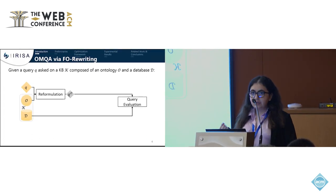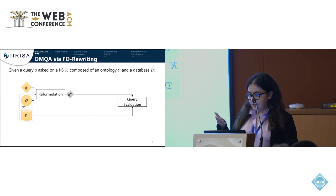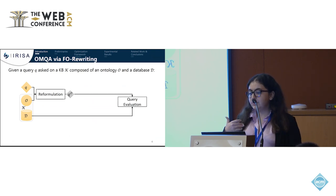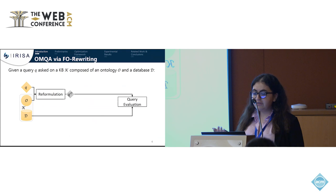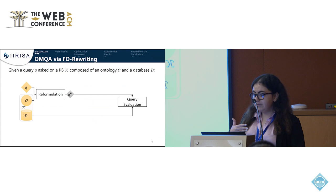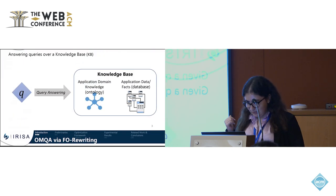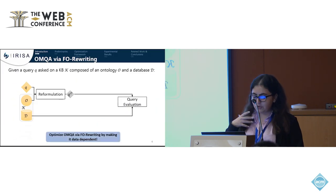We consider OMQA via FOE rewriting specifically, represented by the following figure. Given a query Q asked on a knowledge base K made of an ontology O and a database D, FOE rewriting reformulates Q by embedding the ontological knowledge from O into a query formulation Q_O, which can then be asked directly on the database. However, this reformulation is done with respect to the ontology only and does not take the data into consideration, so it can grow exponentially in the size of Q. What we propose is to optimize OMQA via FOE rewriting by making it data-dependent.